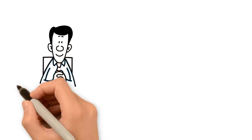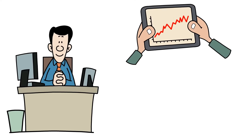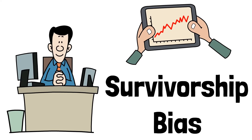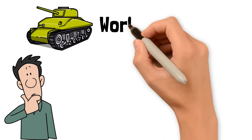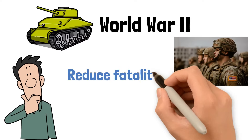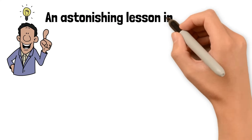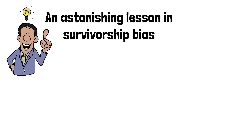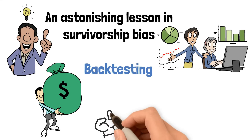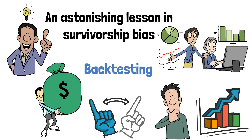Today we're diving into a crucial topic that often goes unnoticed but can have a massive impact on your trading and investment strategies: survivorship bias. Imagine this — you're in the middle of World War II and the U.S. military is desperately trying to figure out how to reduce fatalities among its planes and pilots. What they discover is an astonishing lesson in survivorship bias that can be directly applied to trading, investing, and backtesting. Stick around because this story will change the way you think about success and failure in the financial markets.